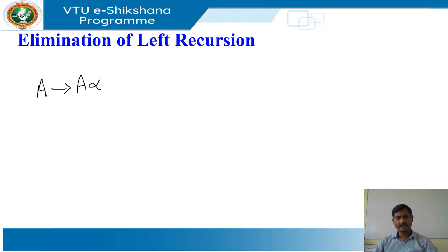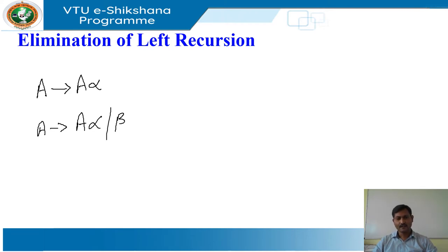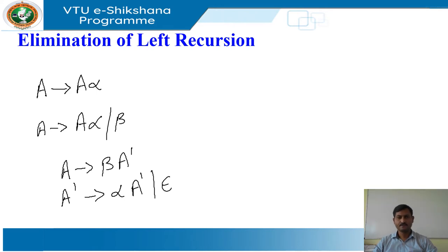Here we see the general case: how a left recursive pair of productions like A derives A alpha | beta could be replaced by non-left recursive productions without changing the strings derived from A. The rule can be: A derives beta A', A' derives alpha A' | epsilon.